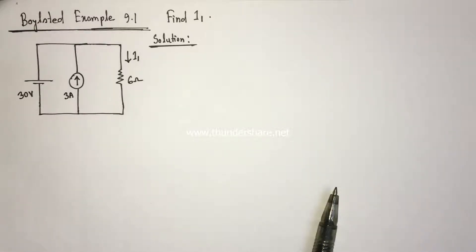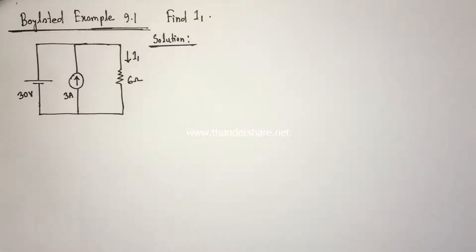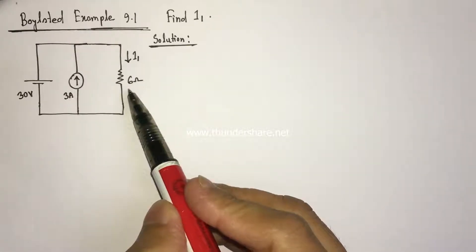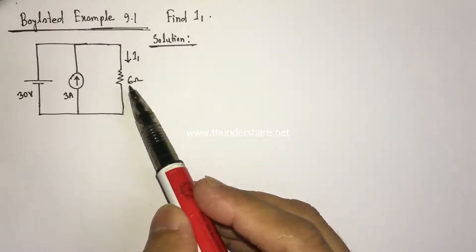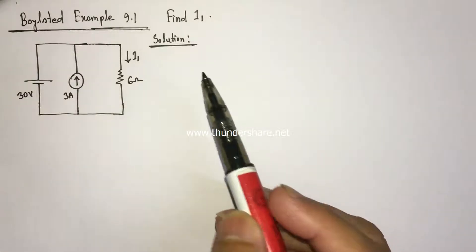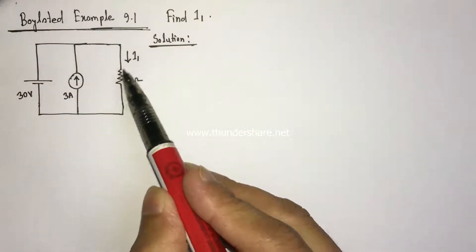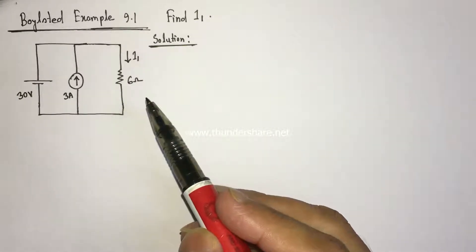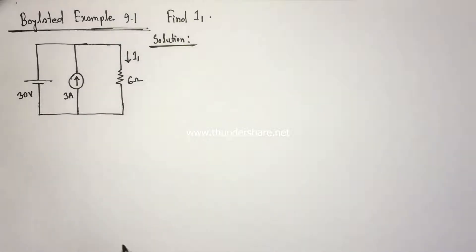Hi viewers, today we will solve example 9.1 from Boyle Street. This is a superposition theorem related problem. Here we have to identify current I1 which is flowing through 6 ohm resistance. Superposition theorem states that current flowing through any element of a network is equal to the algebraic sum of currents produced independently by each source.